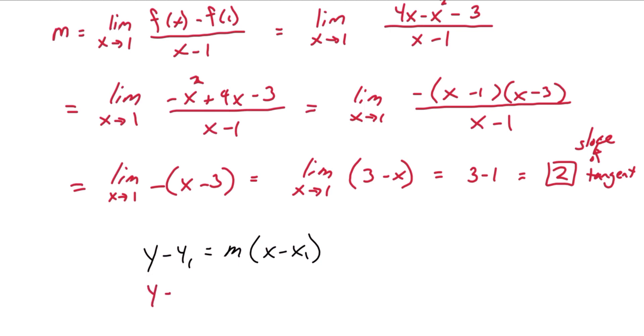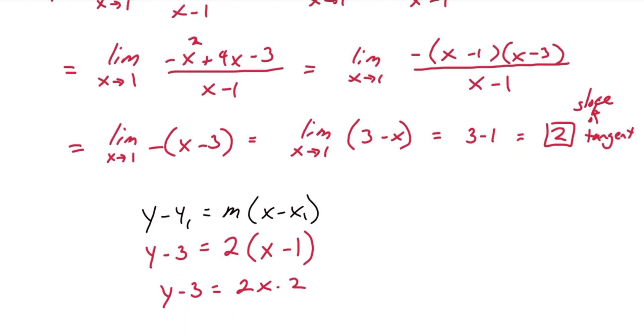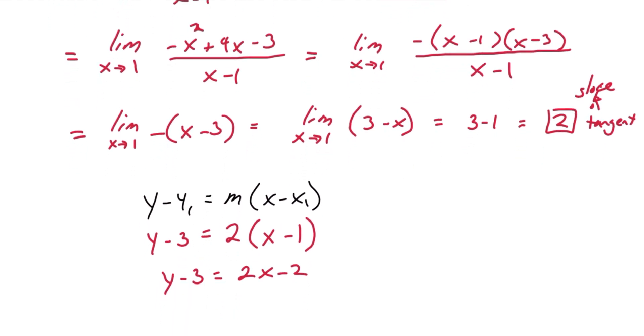what we know. y minus the y-coordinate 3 equals m times x minus 1 from the given coordinate and simplify. y minus 3 equals 2x minus 2. y is equal to 2x plus 1. This is the equation of the tangent line at the point 1, 3.